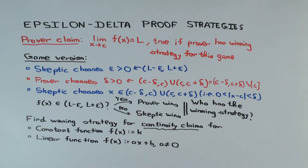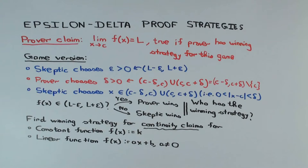What does it mean to say a function is continuous at a point? The limit at a point equals the value at that point. We are going to try to show that the constant function and linear functions are continuous at every point. Let's begin with the constant function — the function f which sends any input to a constant value k. The question is how do we show it's continuous using this definition.